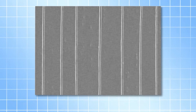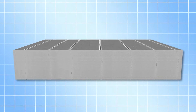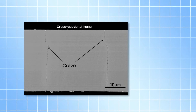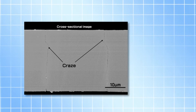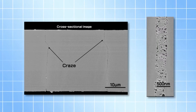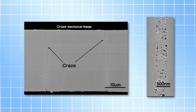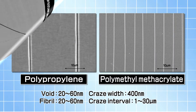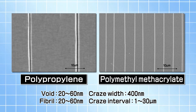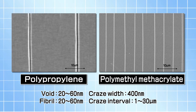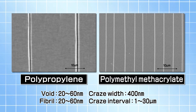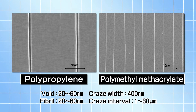This is a cross-sectional view of craze by SEM. You can find the size of fibrils and voids in the craze. This image indicates crazes we made under control. White stripes are the craze phase. They have 400nm width and 20 to 60nm void and fibril diameter.